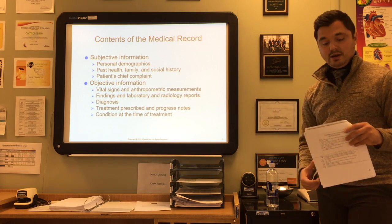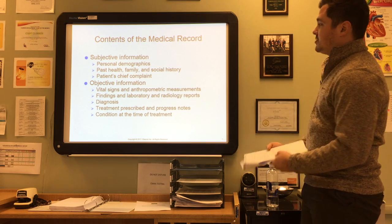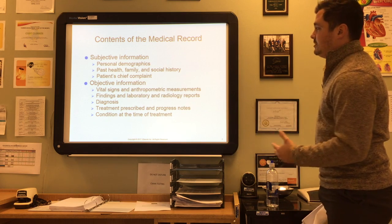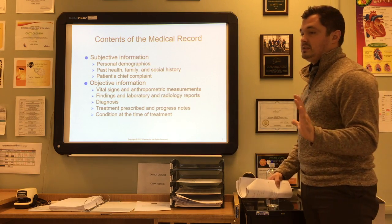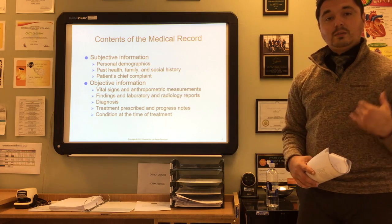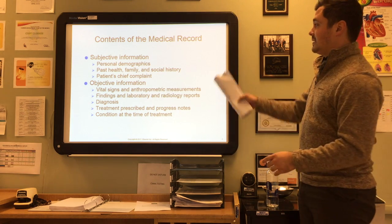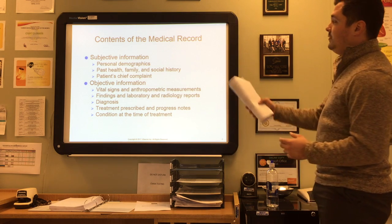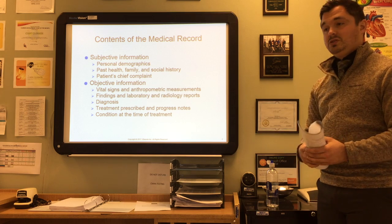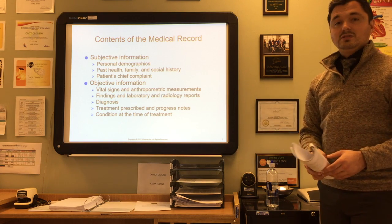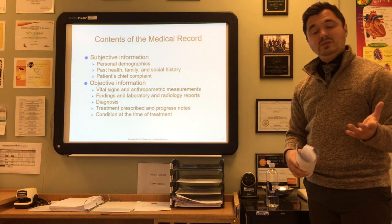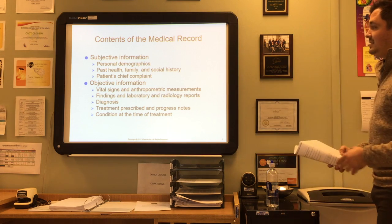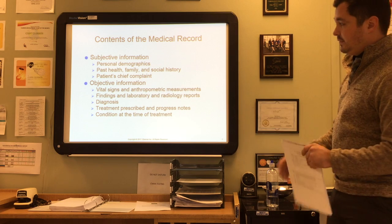Now let's talk about the contents of a medical record. There are two main parts: subjective information and objective information. Subjective information is things the patient tells you — their personal demographics like name, age, date of birth, and address — as well as their past health, family and social history. They'll also give you a chief complaint: what is going on, what is bugging the patient, why are they there to visit you.